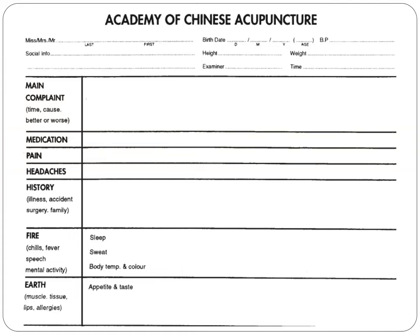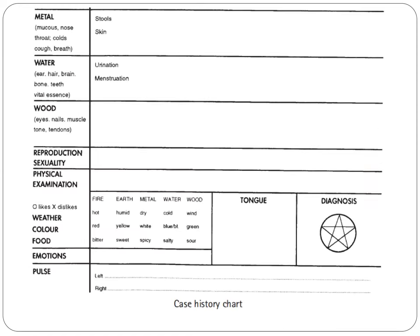For the fire element, we ask if there are chills, fever, speech, mental activity, sleep, sweat, body temperature, and color. For earth, we need to ask about the muscles, tissue, lips, allergies, appetite, and taste. For metal, we ask about mucous, nose, throat, colon, breathing, stools, and skin.